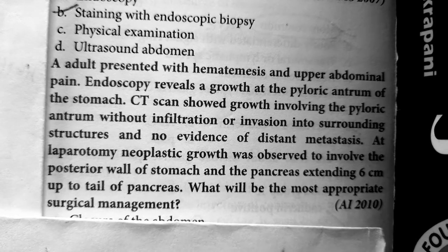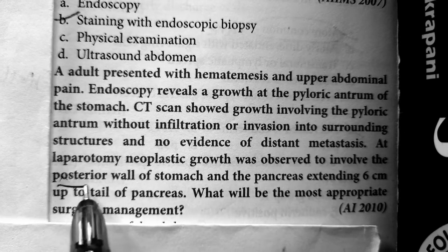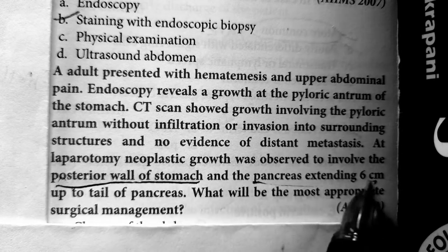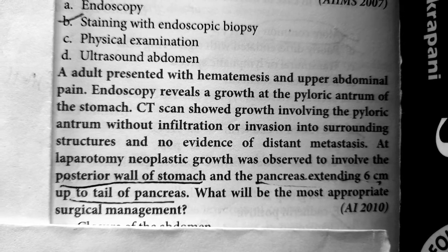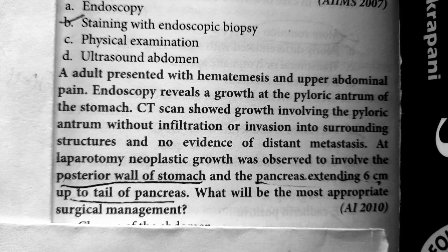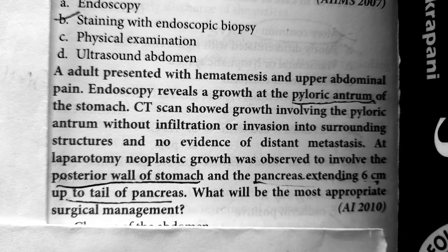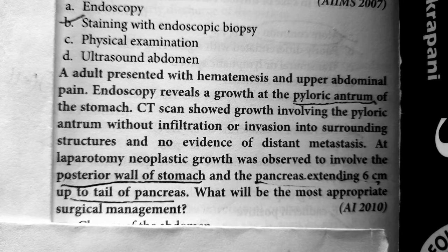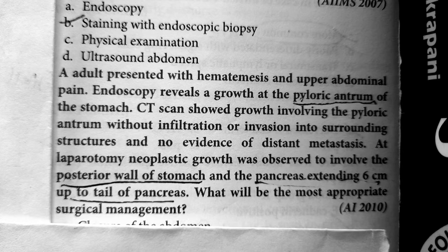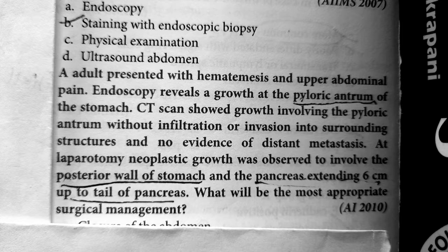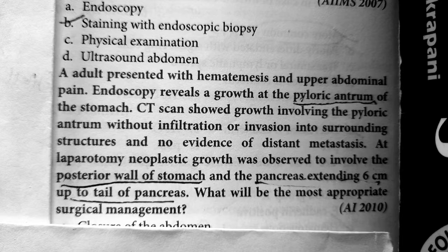This neoplastic growth is actually involving the posterior wall of the stomach and pancreas, extending up to 6 cm to the tail of pancreas. The tumor is in the posterior wall of the stomach and in the distal part of the stomach — the pyloric antrum. If the tumor is in the pyloric antrum, we can do a subtotal gastrectomy. But if the tumor is in the proximal part of the stomach or mid-body, then you should do total gastrectomy. Since the tumor is in the pyloric antrum, you should do partial gastrectomy.